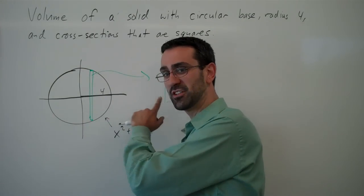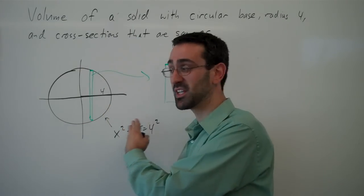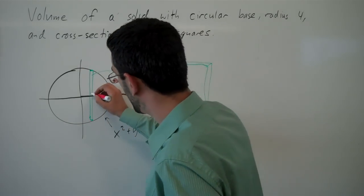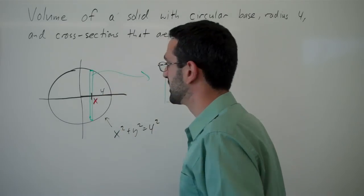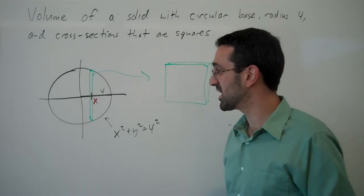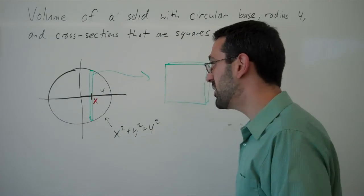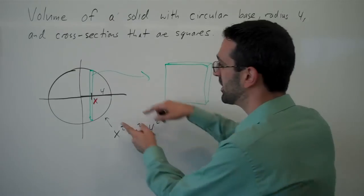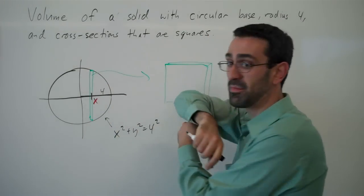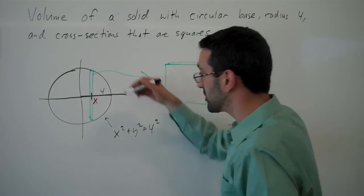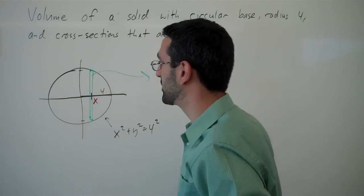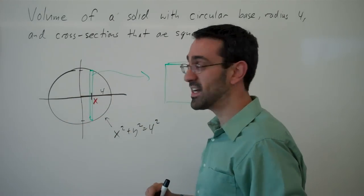Next I need to introduce a variable for where I am slicing. And here it looks like the x value is giving me the location of the slice. So now, from that x value, I need to know how tall my slice is. So for that, I need to know what these y values are so I can find the height.